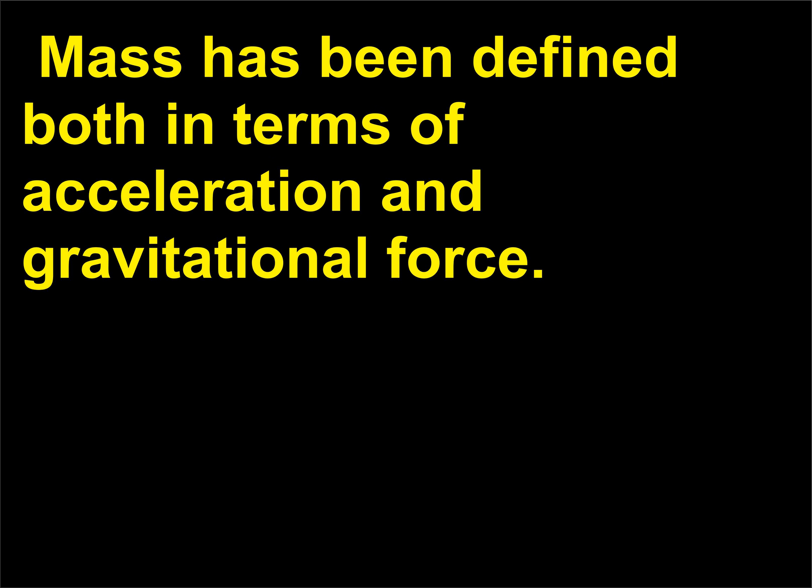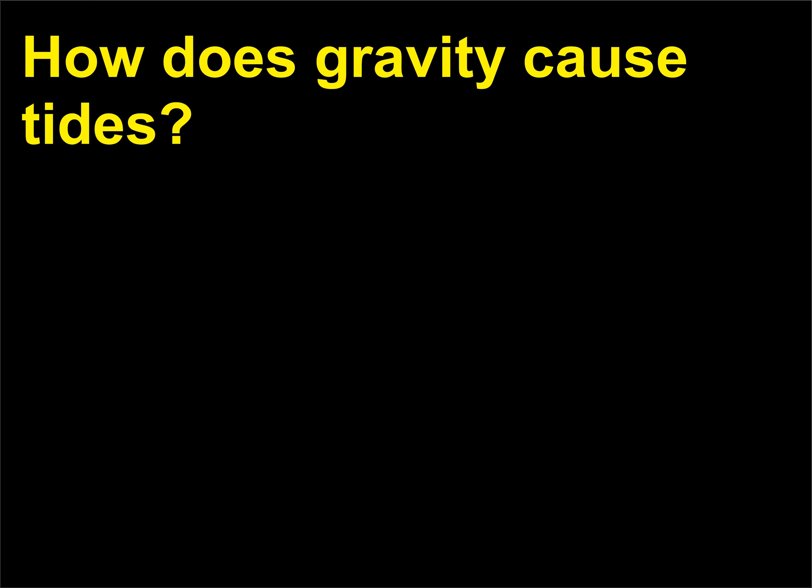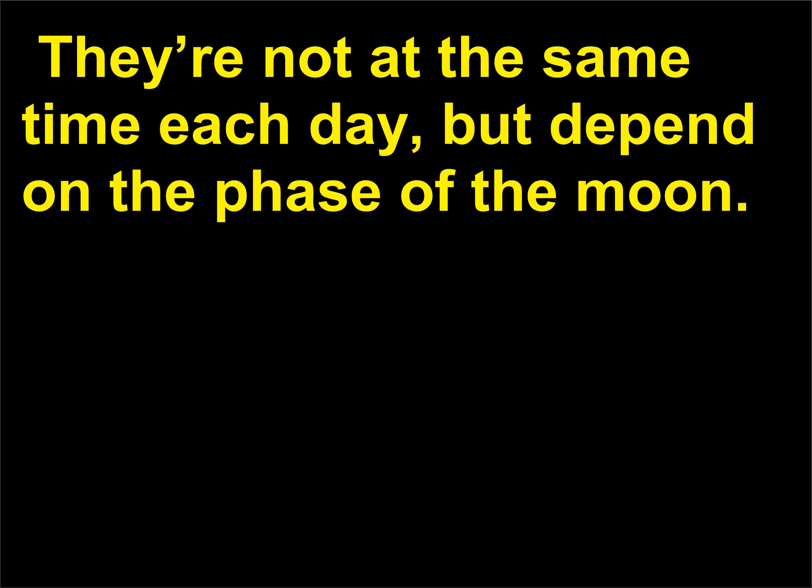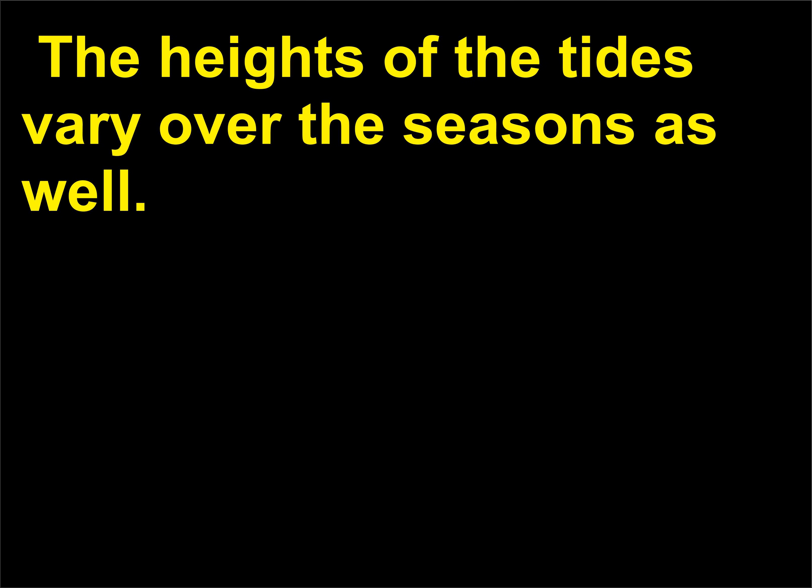Mass has been defined both in terms of acceleration and gravitational force. As someone who lives near an ocean will know, there are two high tides and two low tides each day. They're not at the same time each day, but depend on the phase of the moon. The heights of the tides vary over the seasons as well.